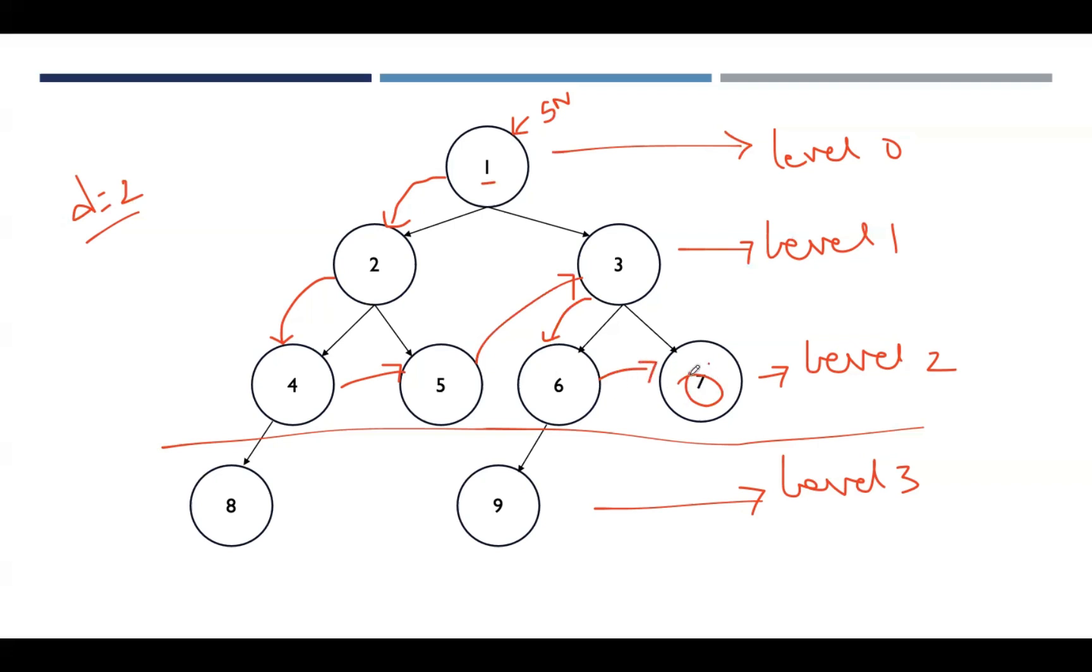7 is our goal node. So what is the path? The path is 1, 2, 4, 5, 3, 6, and 7.